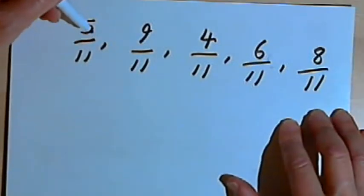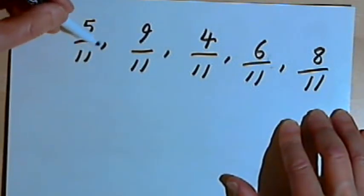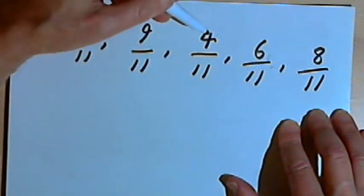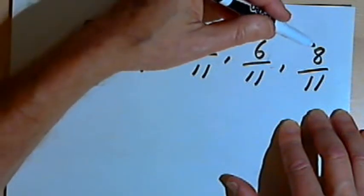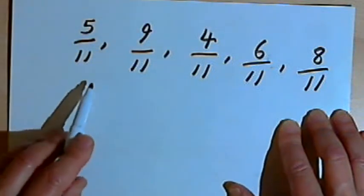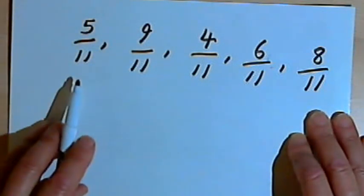Here I've got five fractions: 5 over 11, 9 over 11, 4 over 11, 6 over 11, and 8 over 11. Now, the first thing we notice is they all have the same denominator.